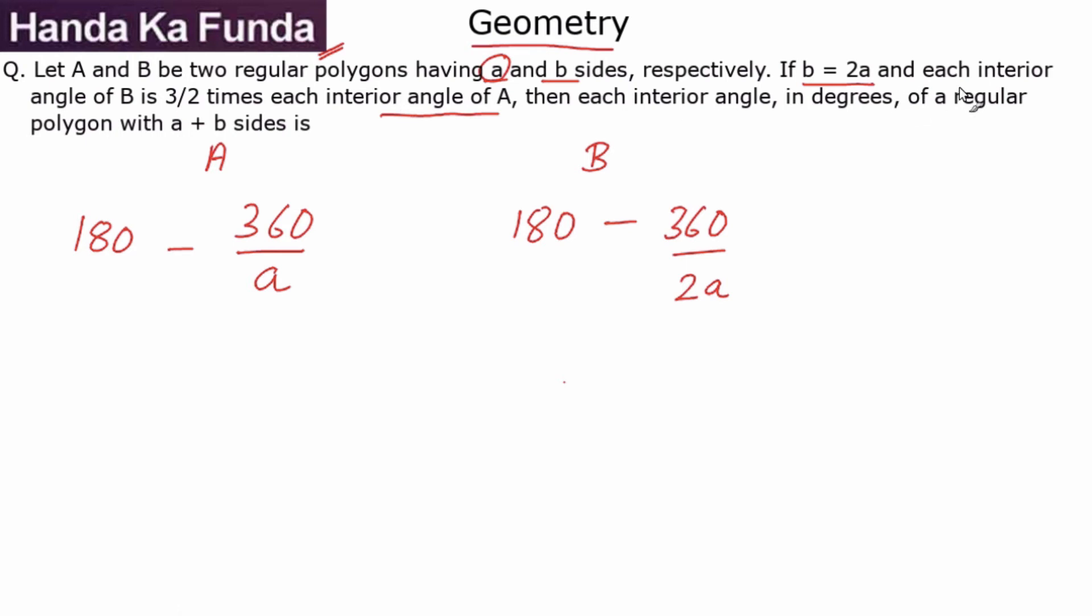This is the interior angle for A and this is the interior angle for B. We are also given that the interior angle for B is 3/2 times the interior angle of A. So, this is nothing else but 3/2 times of this is the interior angle for B. Now, we have one equation, one variable. Let's try and solve for A.